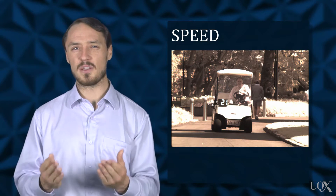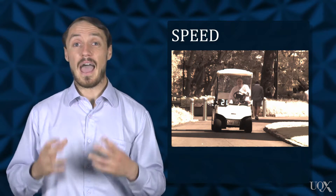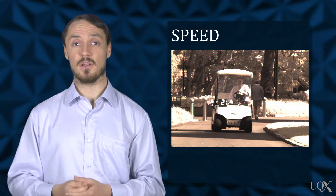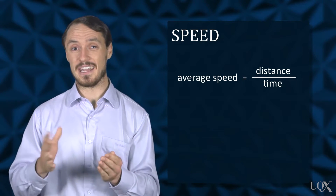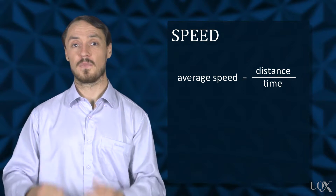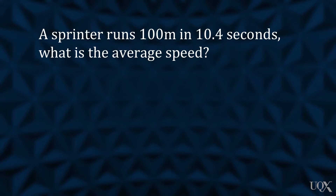But how do we measure speed without using a speedometer? Average speed can be calculated using this formula: average speed equals distance over time. Let's look at an example. If a sprinter runs 100 meters in 10.4 seconds, what is the average speed?